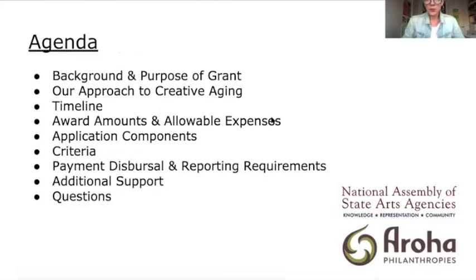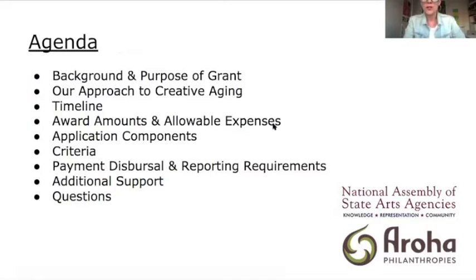We're going to run through a quick overview of the background and purpose of our grant; the approach we're taking to creative aging; the timeline; award amounts and allowable expenses; application components; criteria for adjudication; payment dispersal and reporting requirements; and additional support. Then we'll get to questions. All of this information and more does appear in the grant guidelines, so you'll be able to follow along as we go.